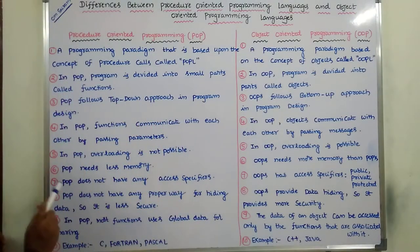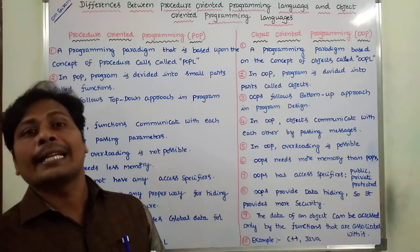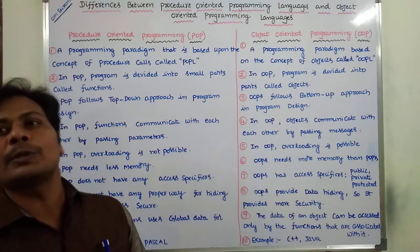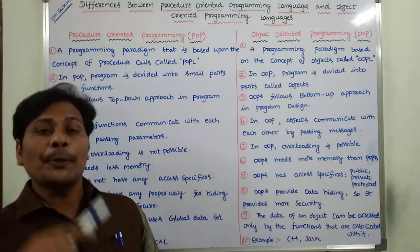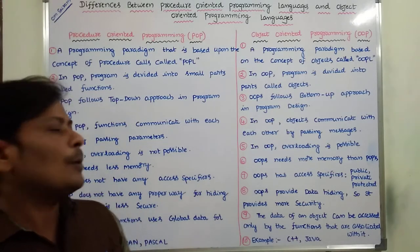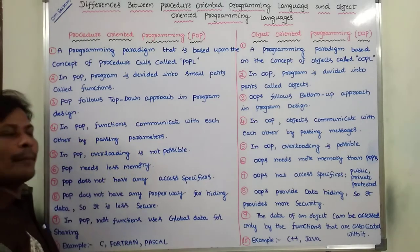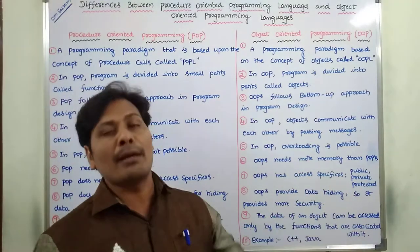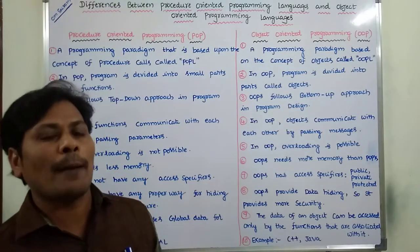The sixth difference: POPL needs less memory. Once we define a function, it can be used many times — because of that, POP needs less memory. But OOPs needs more memory when compared to Procedure Oriented Programming Language.